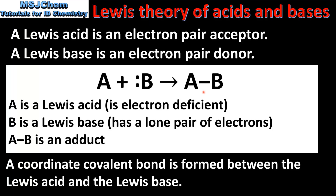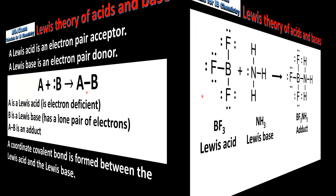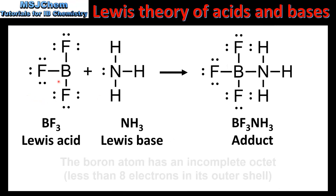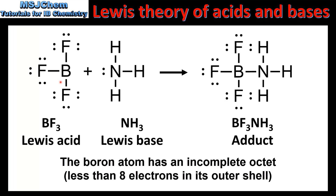Next we'll have a look at an example. Here we have the reaction between boron trifluoride and ammonia. The boron atom in boron trifluoride is electron deficient — it only has 6 electrons in its valence shell. Ammonia has a lone pair of electrons on the nitrogen atom. When they react together they form an adduct which is BF3NH3.